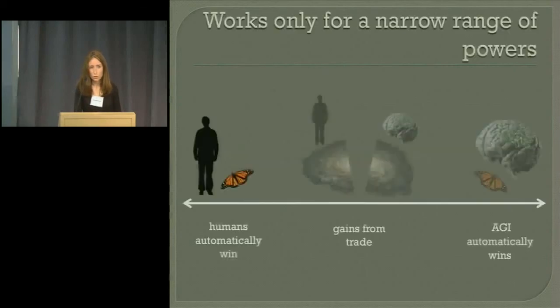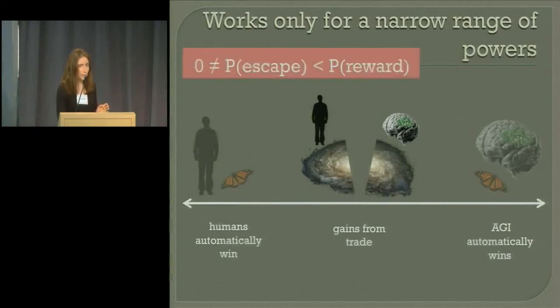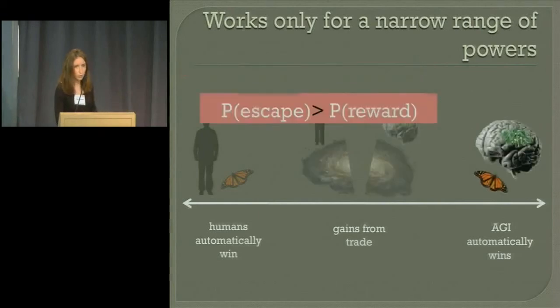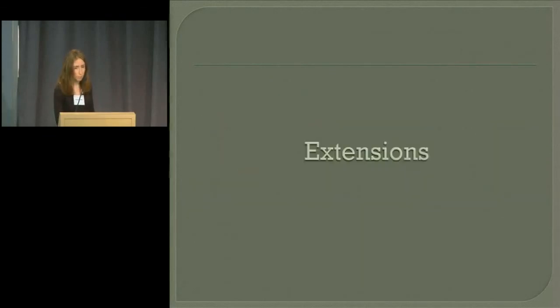Second limitation, AI power range. So if we're much stronger than it, we don't have to worry. There's a middle gains from trade kind of region where the probability of escape is smaller than the probability of reward. But if it gets really powerful, the probability of escape is larger than the probability we'll keep our deal, no trade.